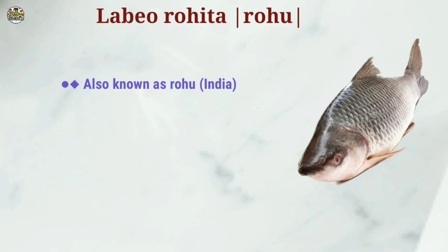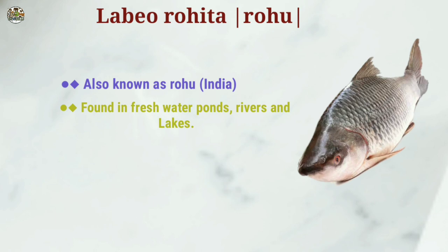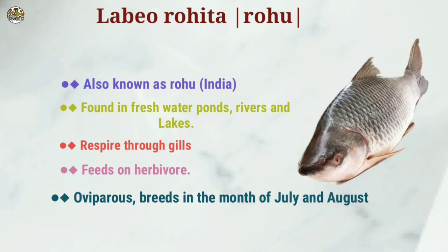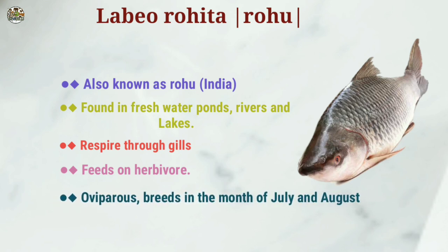Labeo rohita is also known as Rohu. Rohu is commonly found in freshwater ponds, rivers, and lakes. It prefers clean water and respires by gills. It feeds as a herbivore, eating algae and aquatic plants. It is oviparous and breeds in running water in the months of July and August.